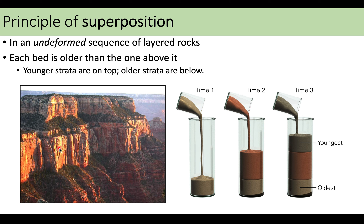The principle of superposition states that in an undeformed sequence of layered rock, the oldest layer is going to be at the bottom and each one above it is younger. The youngest layer is always on top; the oldest is always on the bottom. That's because the bottom layer was laid first — you can't have the layer on top without that one already existing, so the layer beneath is always going to be older.